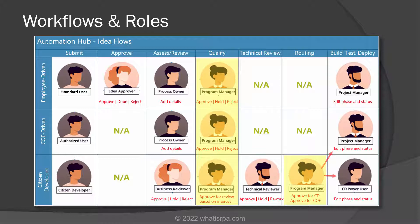The other notable thing is that the program manager role is ubiquitous across all three lanes. That's a very important role, and the role should be filled by somebody close to the top of the COE.